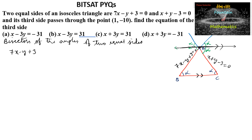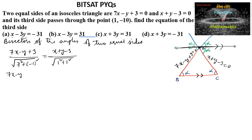The angular bisector of the two equal sides can be given by: 7x minus y plus 3, upon root of (7 squared plus 1 squared), is equal to x plus y minus 3, upon root of (1 squared plus 1 squared). So we get 7x minus y plus 3 upon root 50, equal to plus or minus x plus y minus 3 upon root 2.